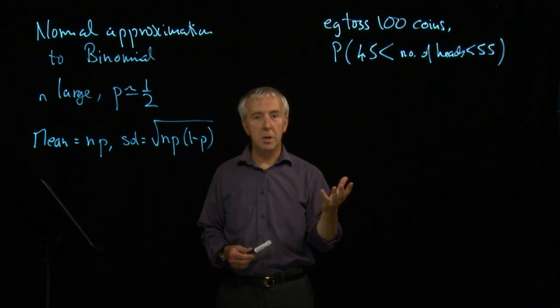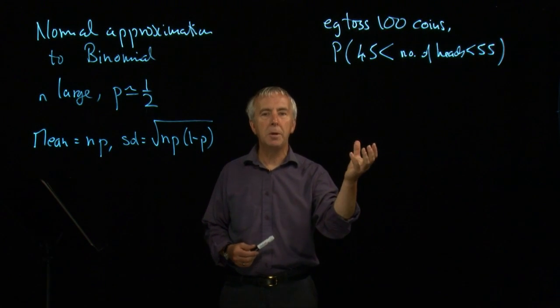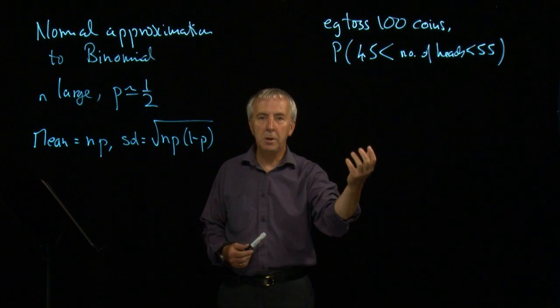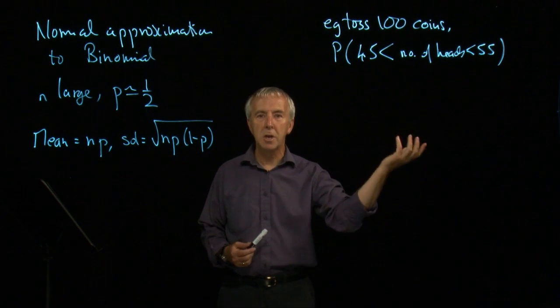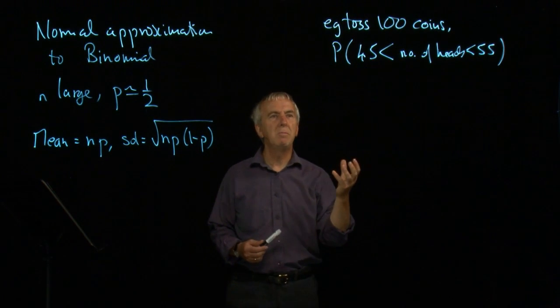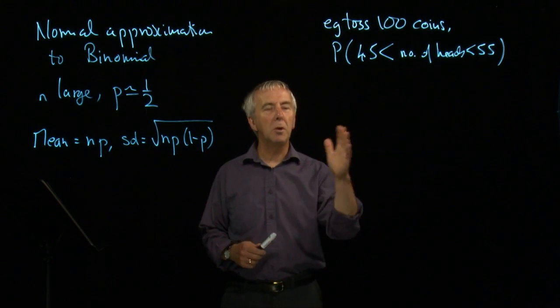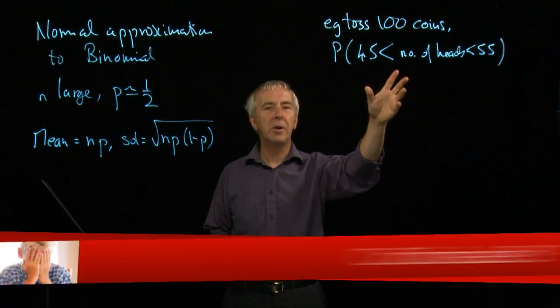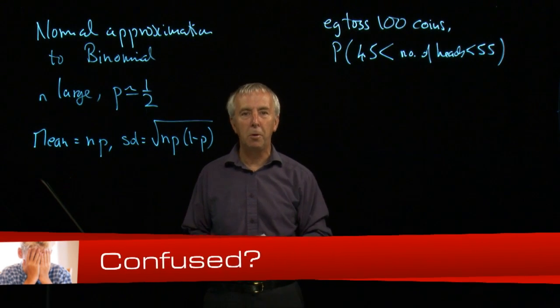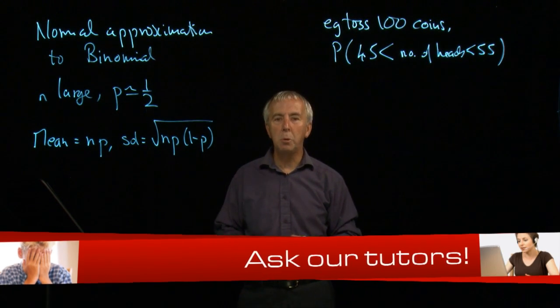Now we could do this exactly. We'd have to find the probability of 46, the probability of 47 and 48 and so on. Each of those is a slightly complicated calculation, but the problem is we've got to do lots of them. There's about 10 of them here, from 46 to 54, inclusive. And it would be very tedious.